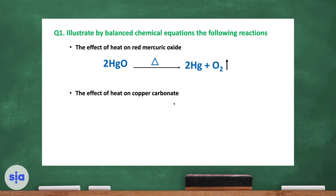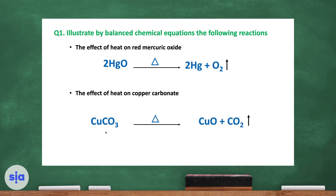Question two: illustrate by balanced chemical equation the effect of heat on copper carbonate. Copper carbonate, with the heat symbol, gives copper oxide and carbon dioxide gas. Check the balance: 1 copper, 1 copper; 1 carbon, 1 carbon; 3 oxygen on the left, and 1 + 2 = 3 oxygen on the right. The upward arrow means carbon dioxide is a gas that leaves the reaction.